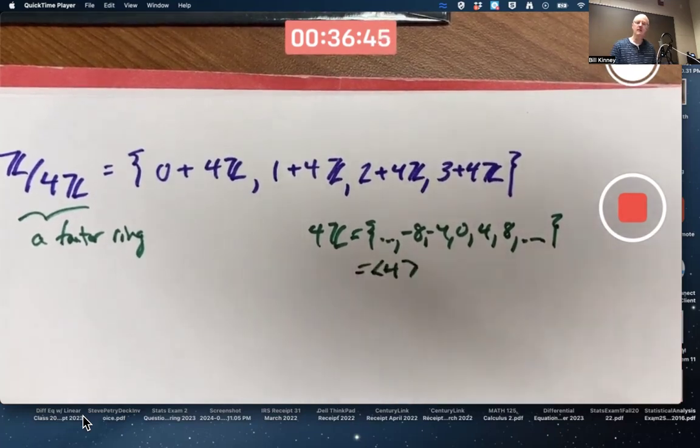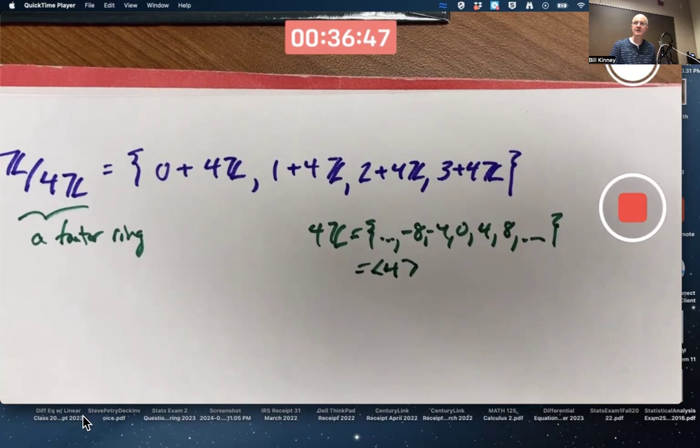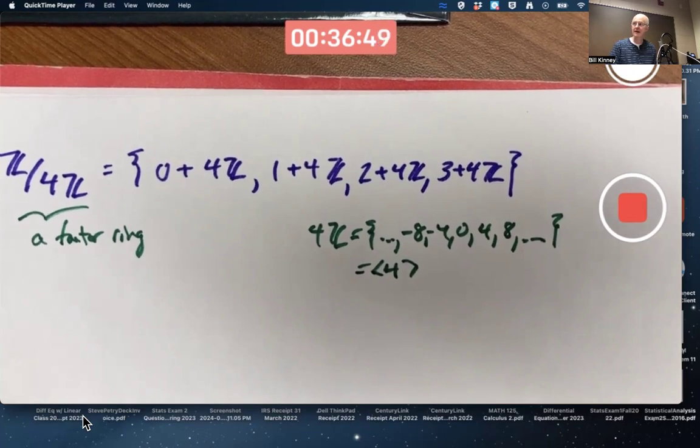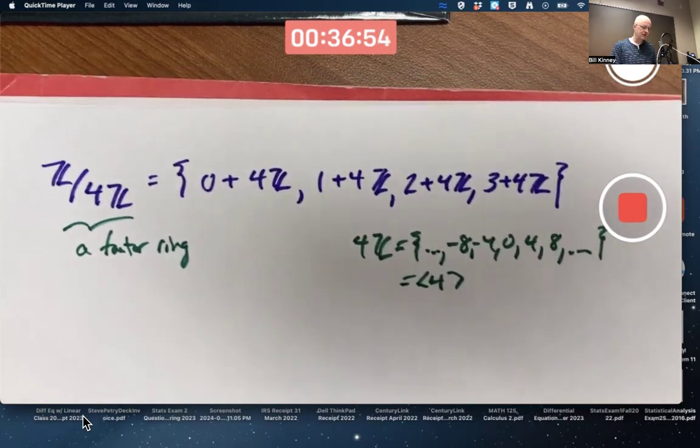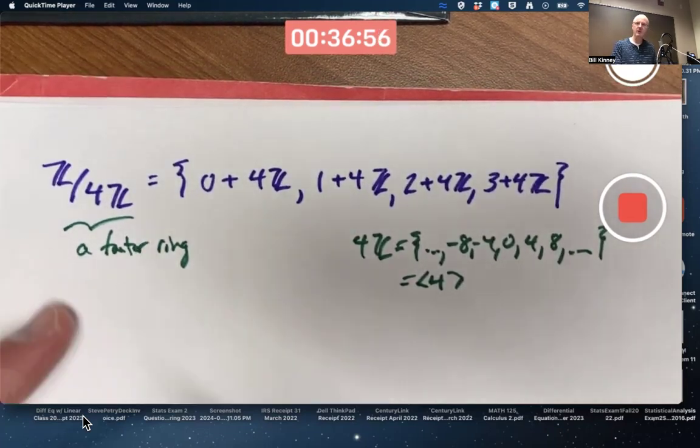You could write it this way too. It's super closed. If you multiply 4 by any integer, you still get a multiple of 4. It is ultimately then an ideal, so we can form the factor ring.